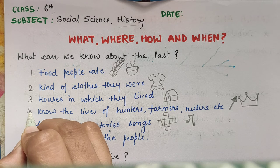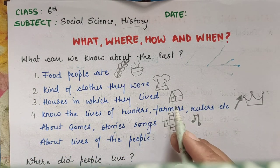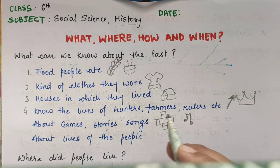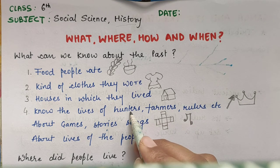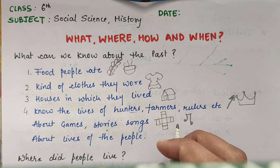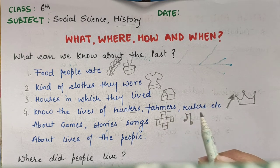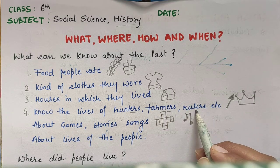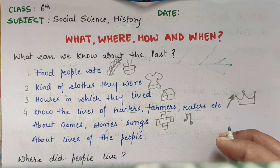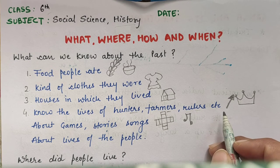Fourth, we can know the lives of hunters, farmers, rulers, etc. Hunters were those people who were killing animals and eating them — like shikari. Farmers were those who did agriculture. Rulers were kings — kings kaise rahte the. Then merchants kaise rahte the — merchants were the traders.